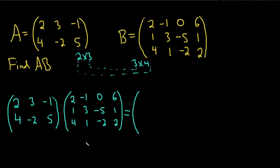Let's carefully work through it. First we're going to find the entry in the first row and first column. To do that, we use the first row and first column: 2 times 2, plus 3 times 1, plus negative 1 times 4. The pattern is: the position of the entry tells you which row of A and which column of B to use.